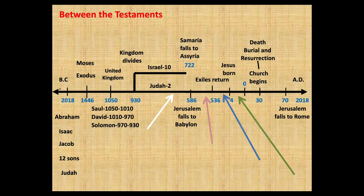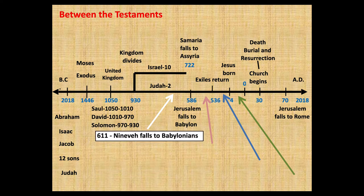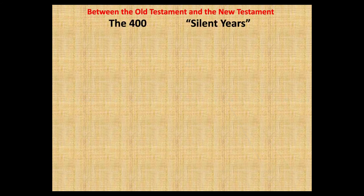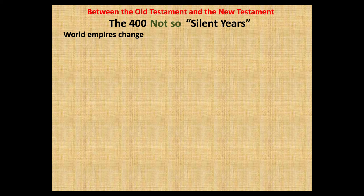As we come to the end of this segment, we look forward to the time between the Old and New Testaments. Recall that Nineveh fell to the Babylonians in 611 BC. Babylon then falls to the Persians in 539, and Persia falls to the Greeks in 330. Rome begins its ascension and domination of the Mediterranean world around 63 BC and earlier. These are important dates as we look at the time between the Testaments — a period of 400 years, sometimes called the 400 silent years, though actually many events took place. These 400 years are really not so silent, as there were major changes in world empires and in the biblical world.